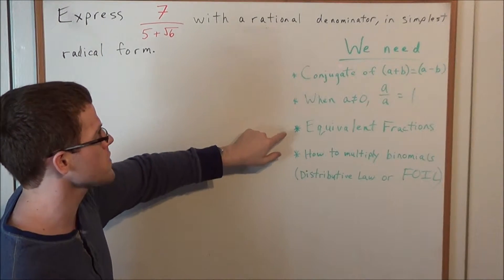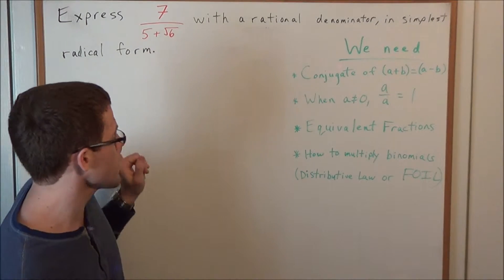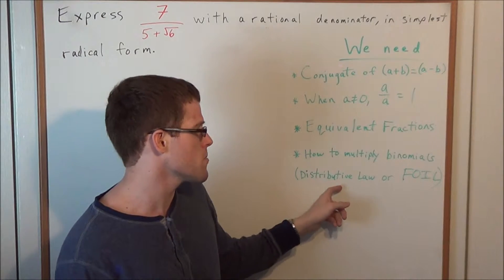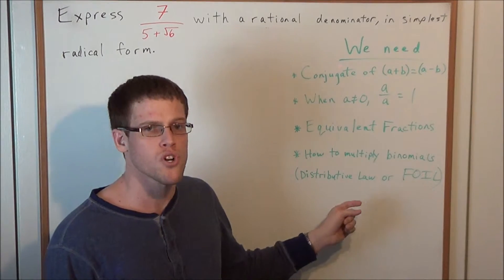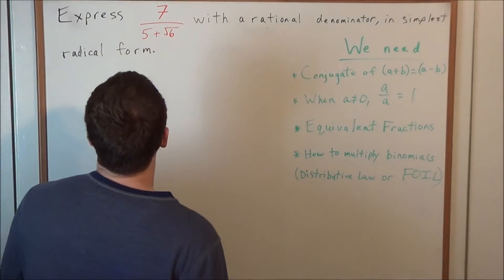But when we generate this equivalent fraction, it's going to have a rational denominator. So now, last, what we need to know how to do is multiply binomials together. This is really just a distributive law, or as most teachers will show it, foiling: first, outer, inner, last. So let's get started with this problem.